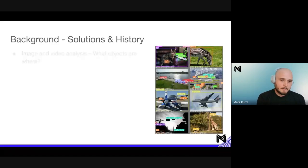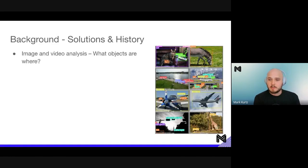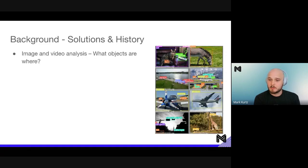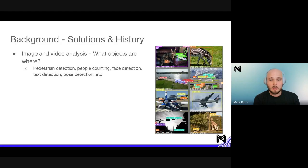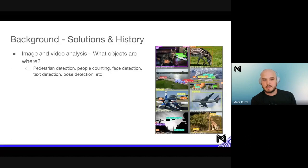For object detection, we're looking at image and video analysis — what objects are where. Given an image or frames from a video, we want to track individual objects throughout that frame and locate them. This is useful for many different reasons: pedestrian detection, people counting, face detection, text detection, pose detection, and many more.